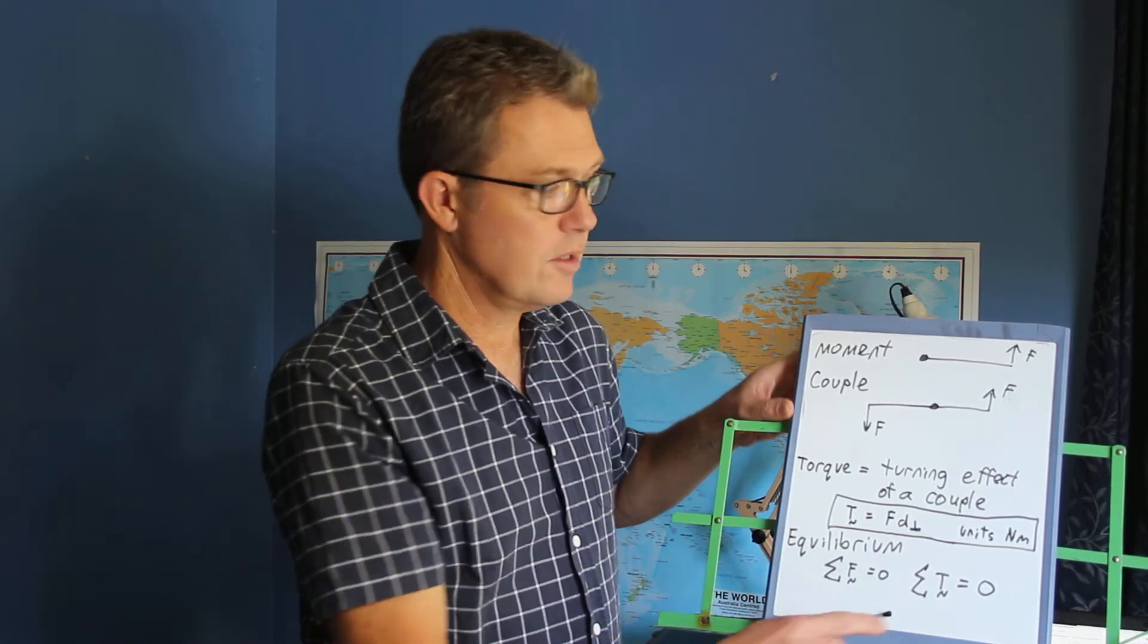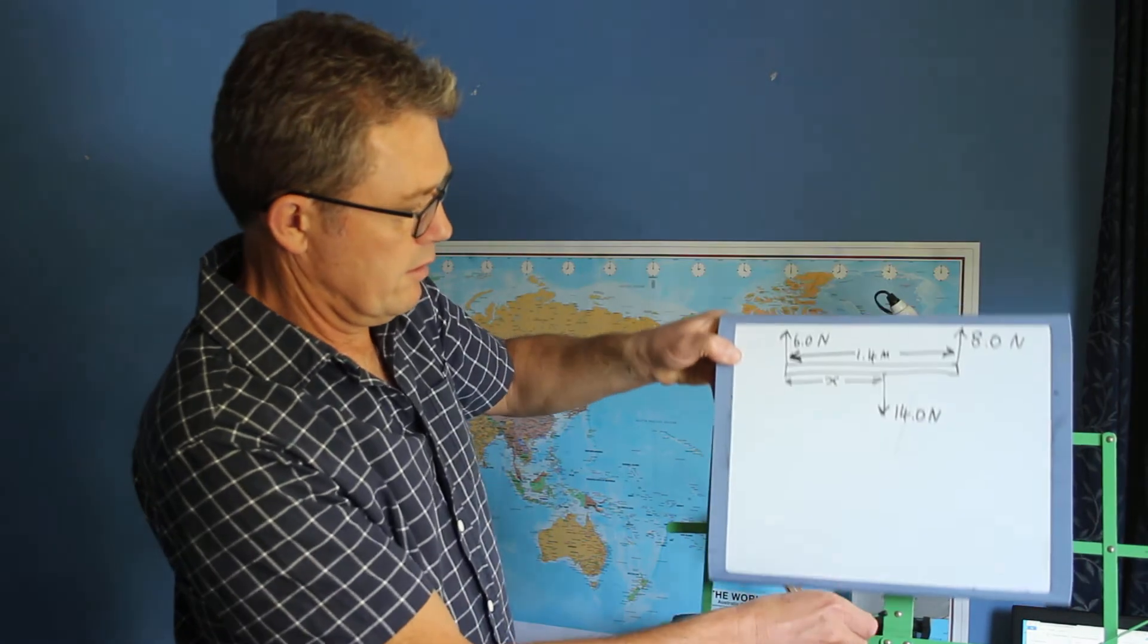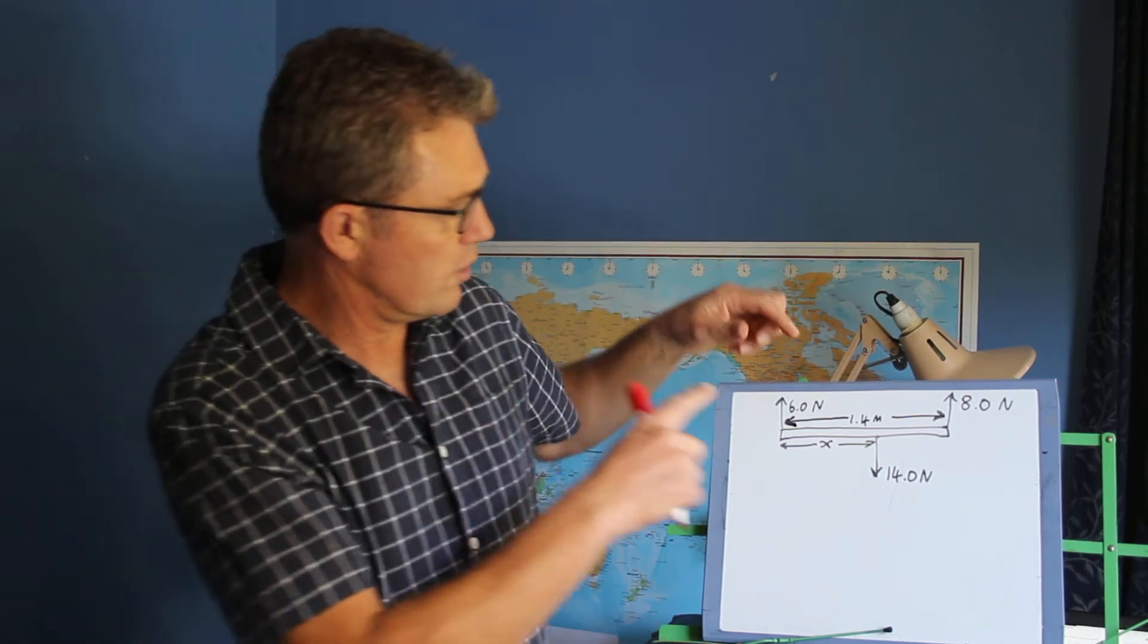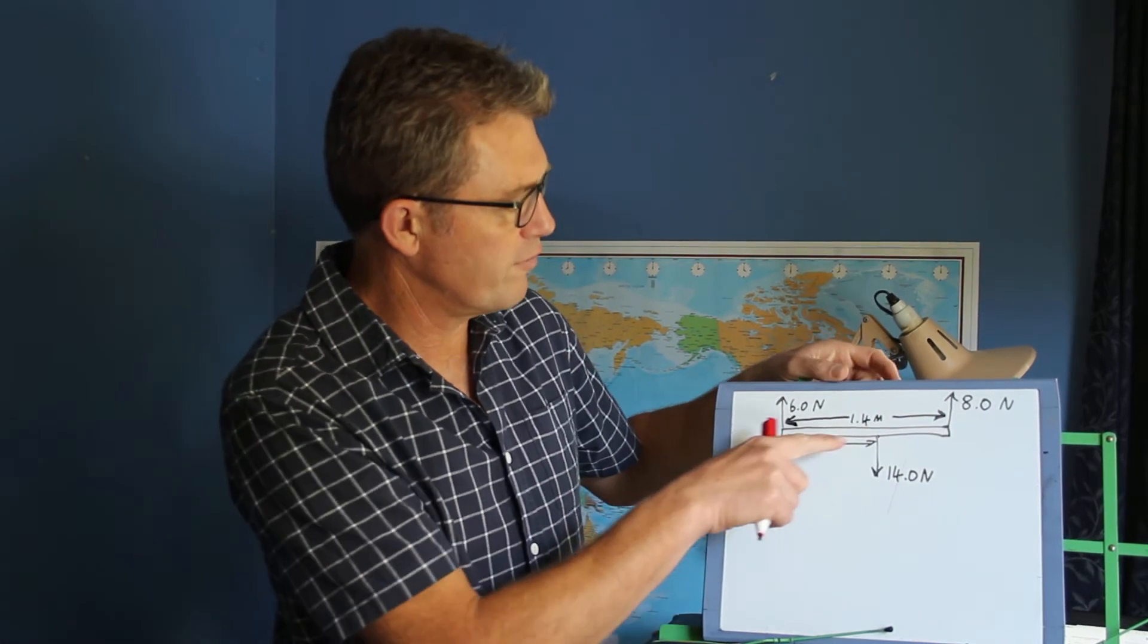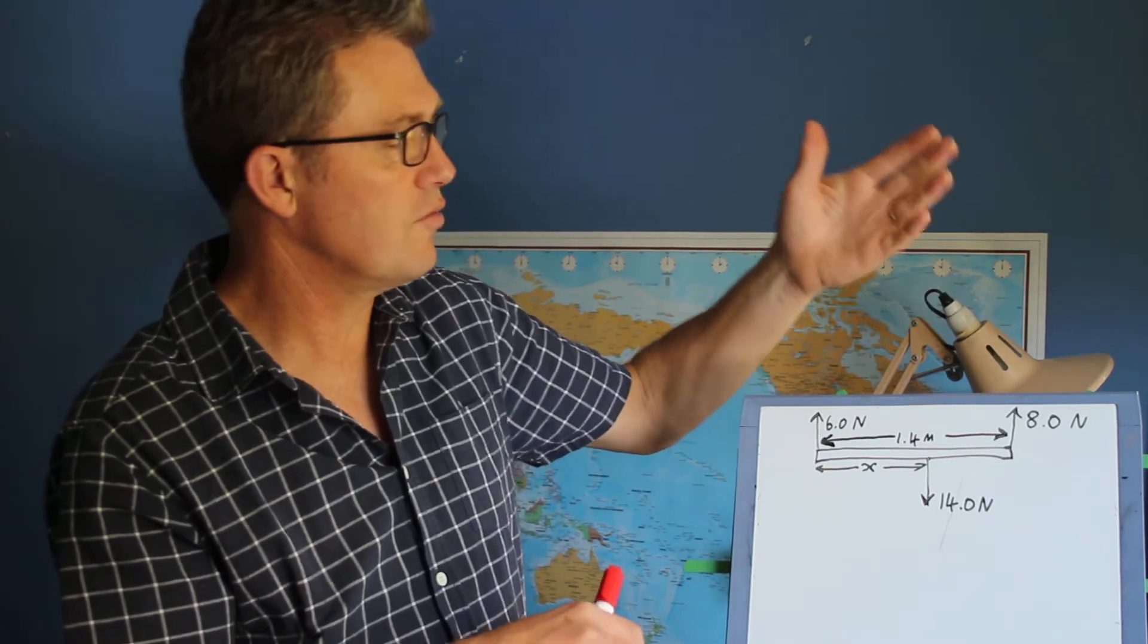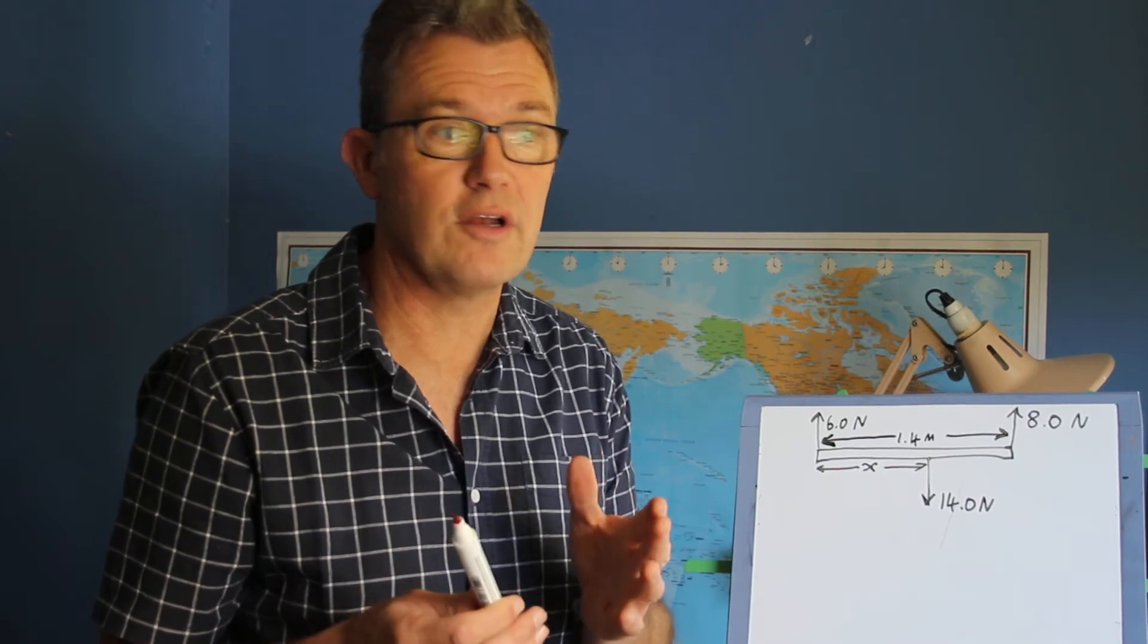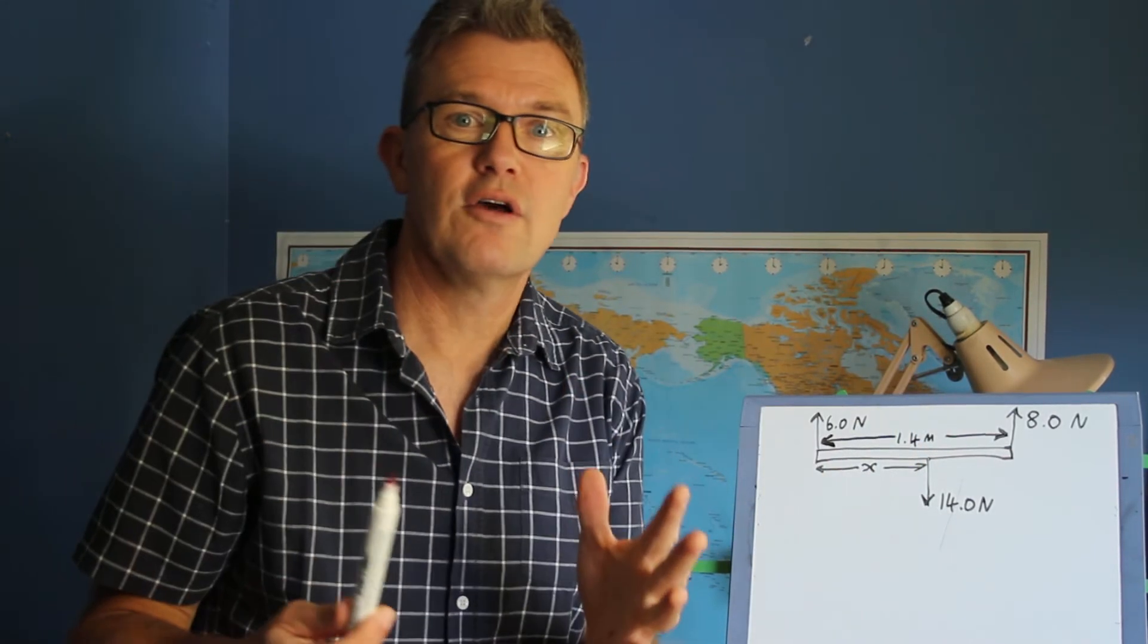So, the best way to explain that is with an example. Here we have a stick. Now this stick has got a 6 Newton force in that direction, an 8 Newton force in that direction, that's left, and we've got a 14 Newton force in this direction, this is right. So, 6 and 8 adds to 14. So you've got a total force of 14 Newtons left, and you've got a total force of 14 Newtons to the right. So it's not difficult to see that the forces add up to zero. 8 plus 6 equals 14. So 8 plus 6 plus negative 14 equals zero. Forces add to zero.